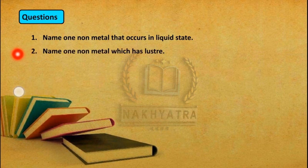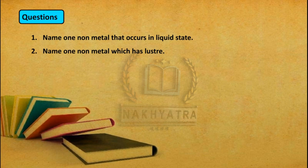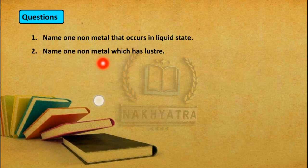Question number 2: Name one non-metal that has lustre. The property of lustre means having a shiny surface. Although all non-metals basically have a dull surface, there are two exceptions — graphite and iodine. Since the question asks for only one example, we can give either graphite or iodine.